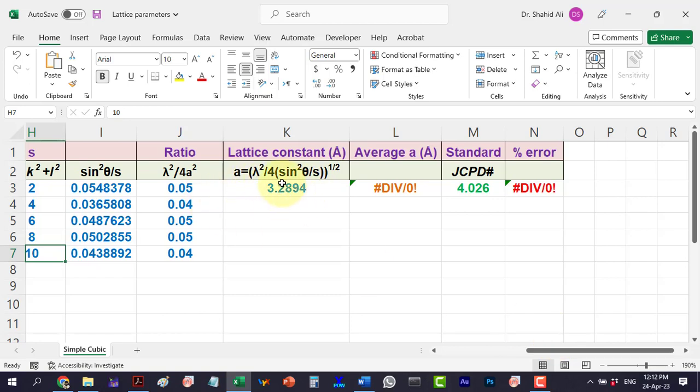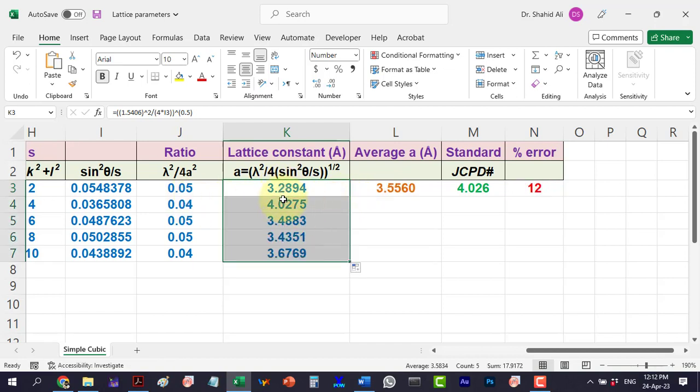Let's calculate the lattice constants. Here for average, we prefer the large angle values. So, the average lattice constant comes out to be 3.56 angstrom.